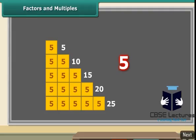5 is a factor of 5, 10, 15, 20 and 25. 5 is equal to or smaller than each of these numbers.